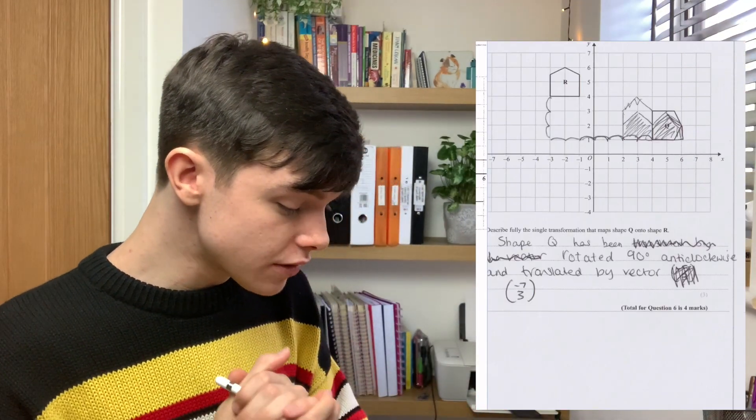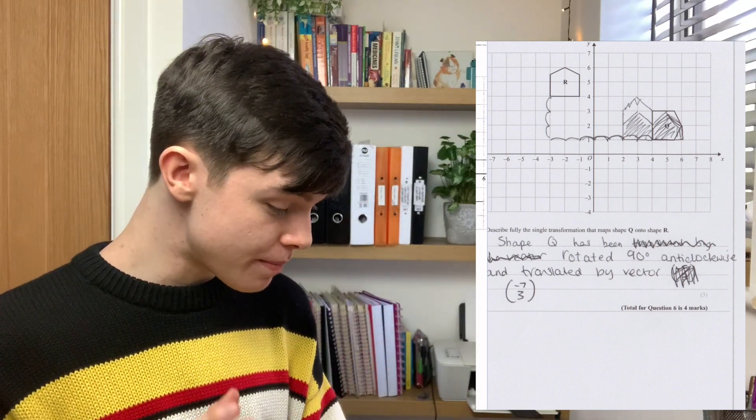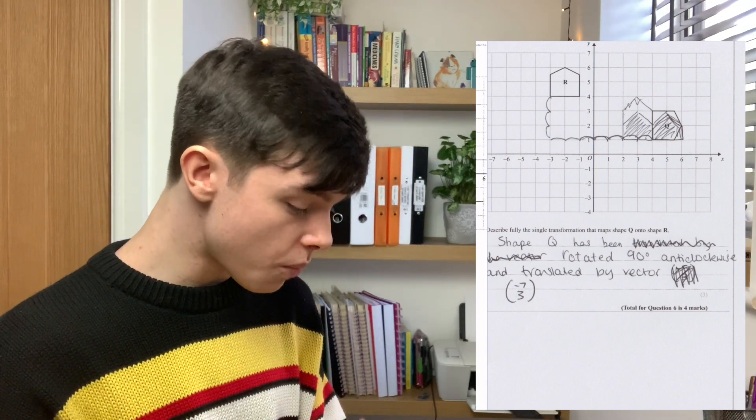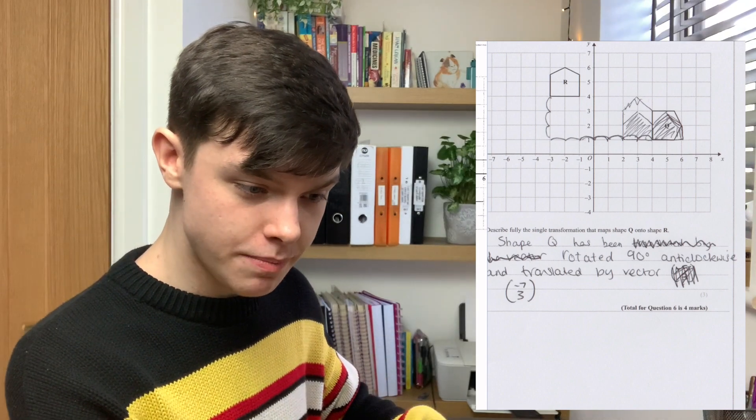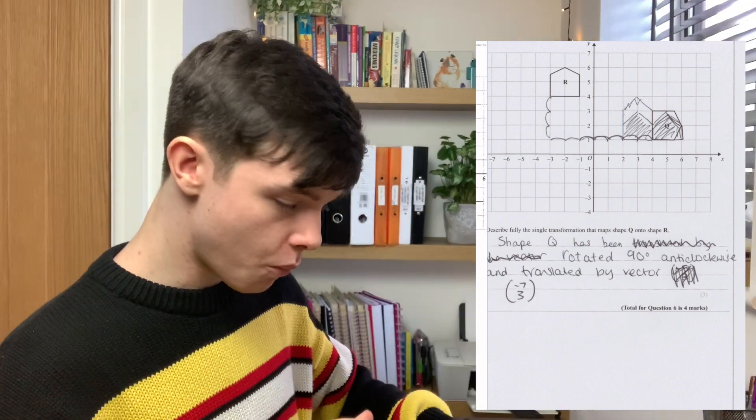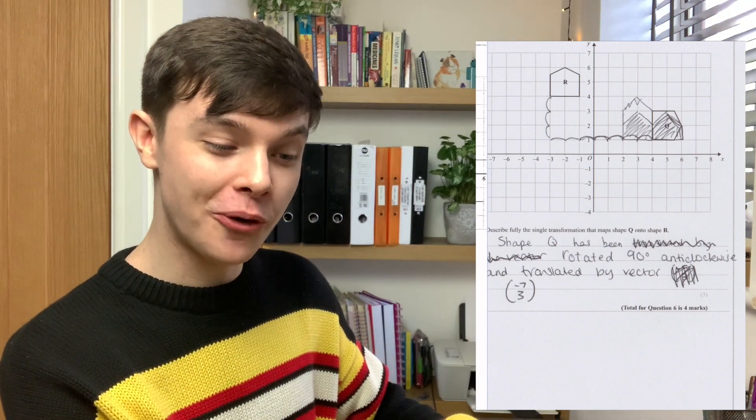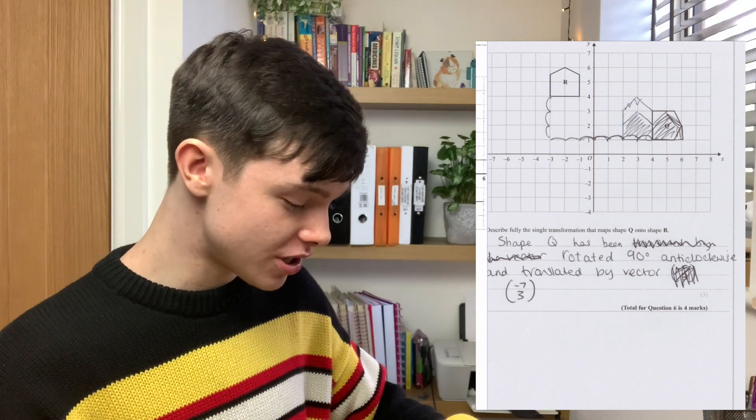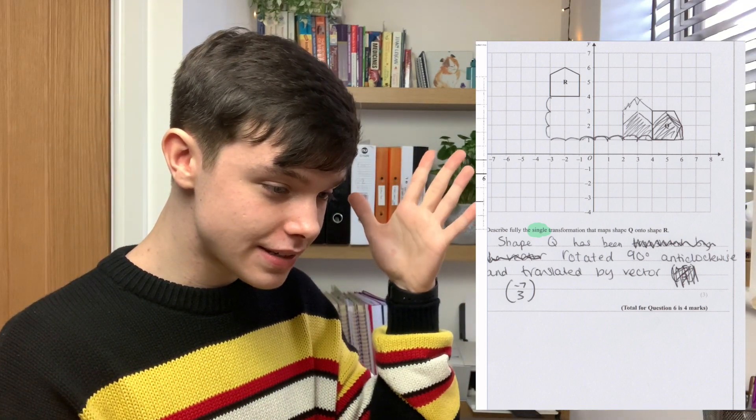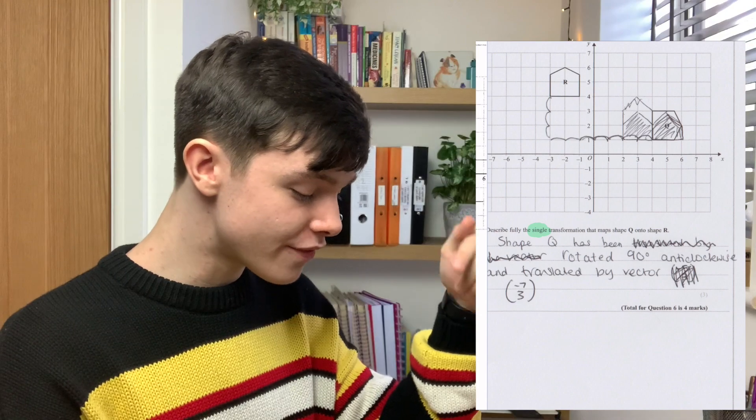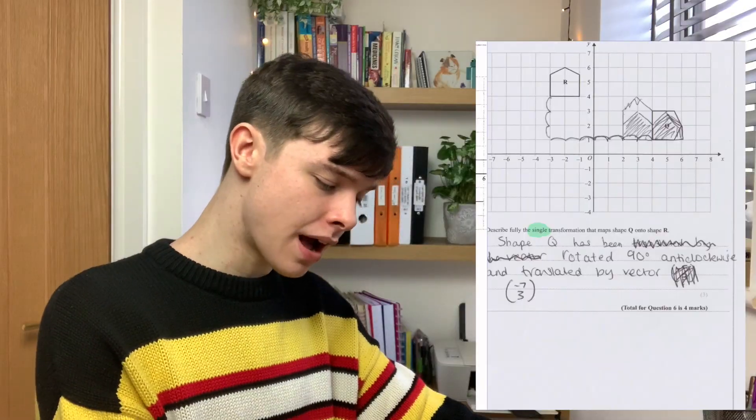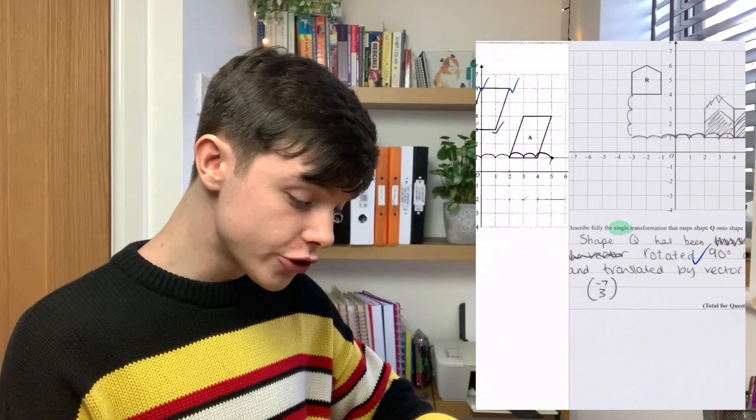Part B says describe fully the single transformation that mapped shape Q onto shape R. Rosie said shape Q has been rotated 90 degrees anticlockwise and translated by the vector minus 7, 3. The mark scheme says rotation center 0, 0, 90 degrees anticlockwise. We've got that there. But the mark scheme then says note award no marks if more than one transformation is given. And it does say single transformation. You're correct with the rotated 90 degrees anticlockwise, but because you've said translated, we can't give you it. One mark because it was rotated. So, the total for question six was two marks.